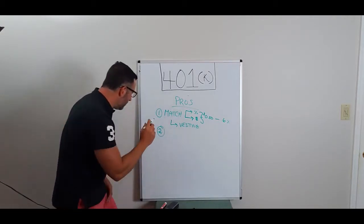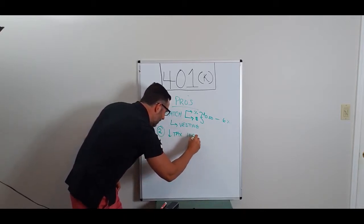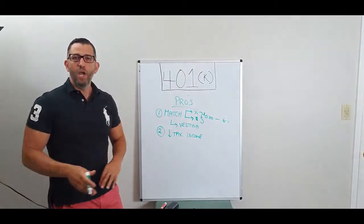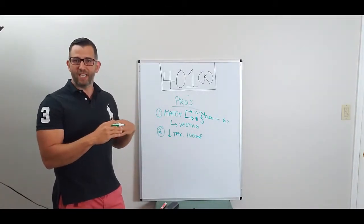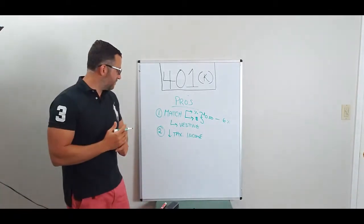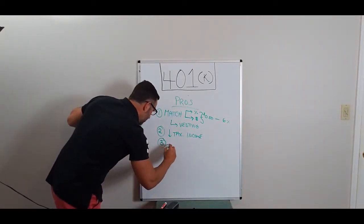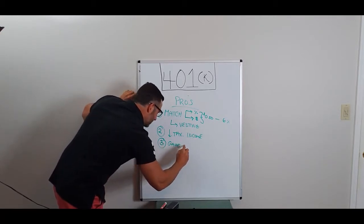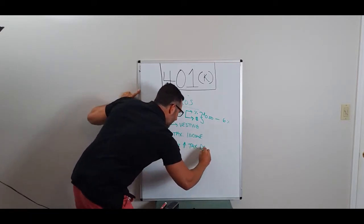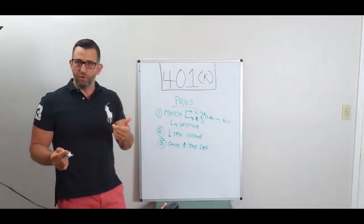Pro number two is you are able to reduce your taxable income every month. This doesn't mean you avoid it. You have to pay tax when you retire, but you're able to, at the moment in time, reduce your current taxable income, and if it's large enough, you're able to reduce your federal tax bracket as well.